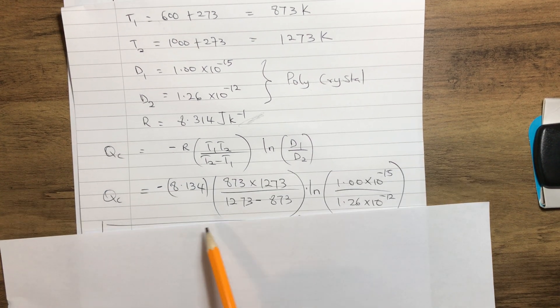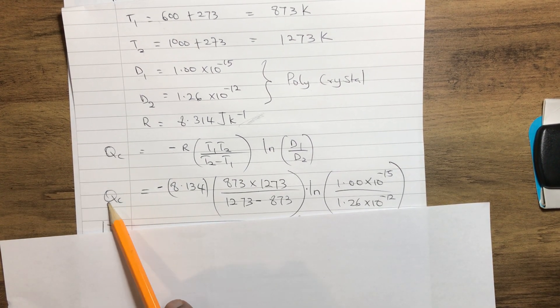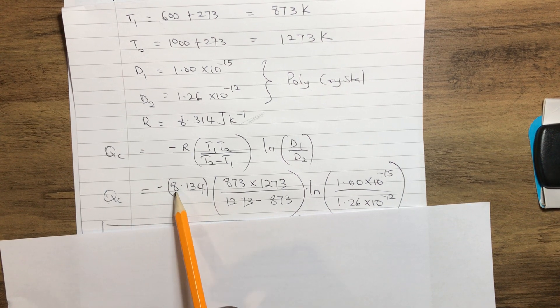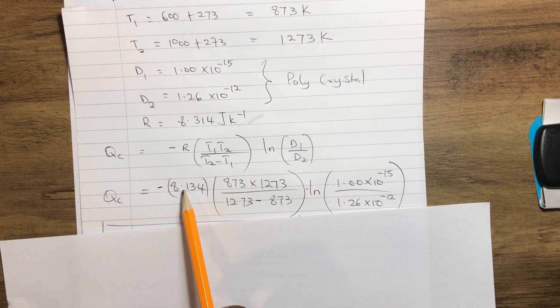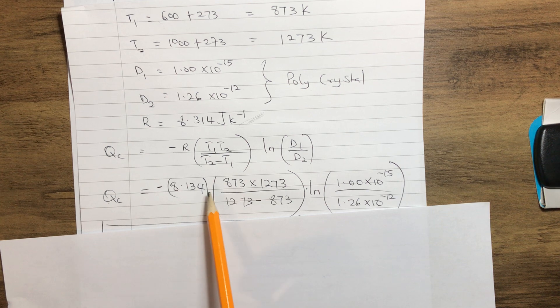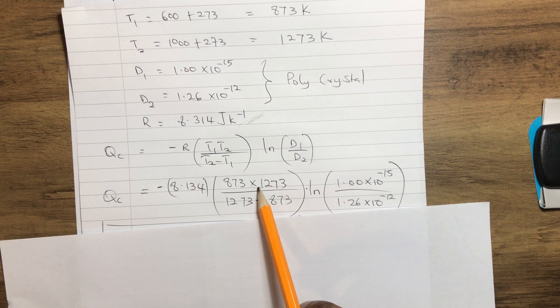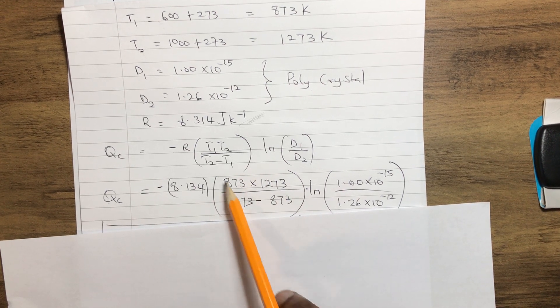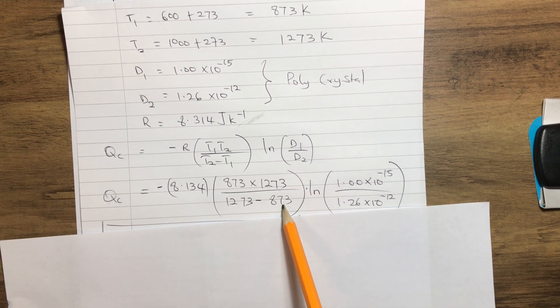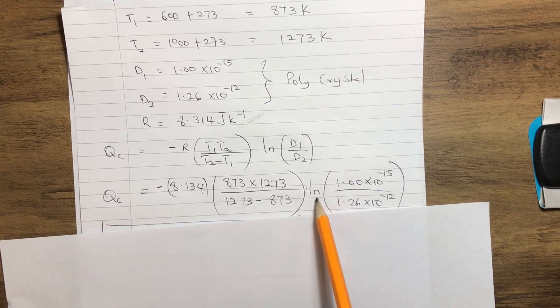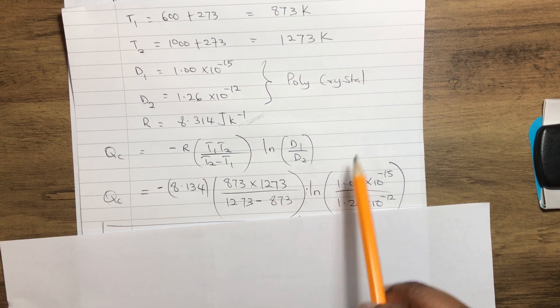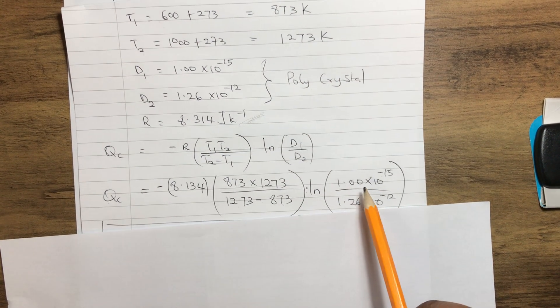From there, we slot in our parameters. The activation energy equals -8.314 times T1 multiplied by T2 over T2 minus T1, multiplied by the natural logarithm of D1/D2 for the polycrystal.